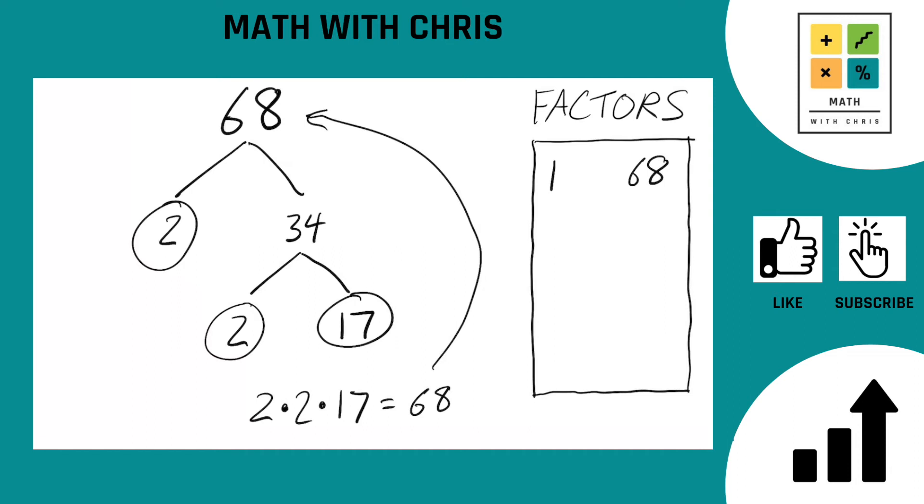All right, let's bank all the prime numbers we found. We found a 2 and we found a 17. Those are the prime numbers we hit. And any number we hit along the way, 34. Got a 34. So we can bank that as well. 34 is a factor of 68.